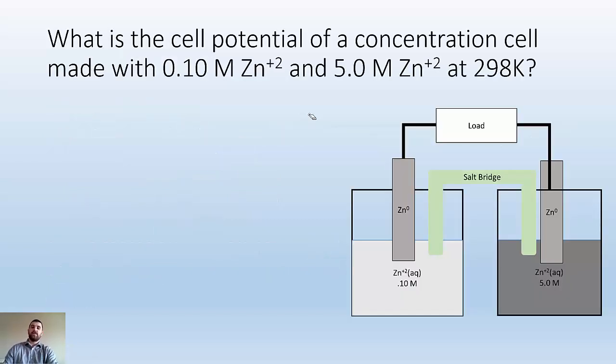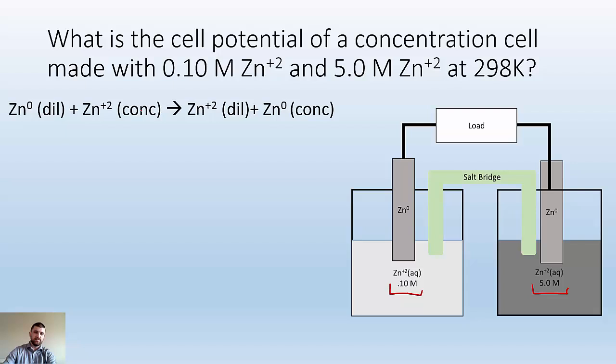What is the cell potential of a concentration cell made with 0.10 M Zn+2 and 5.0 M Zn+2 at 298K? I can see here I got the diluted side and the concentrated side. So I know that this is my overall reaction. The diluted side becoming oxidized and the concentrated side becoming reduced.